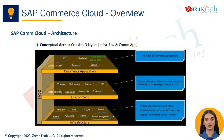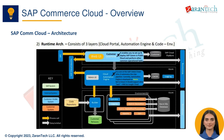Here we see the overall architecture of SAP Commerce Cloud. At the bottom we have the managed Azure infrastructure. On top of that runs SAP Commerce Cloud's persistence and automation layers. The persistence layer handles databases and file storage, while the automation engine handles provisioning, deployment, and ongoing management.